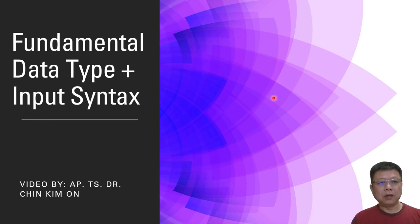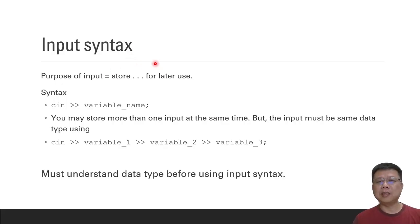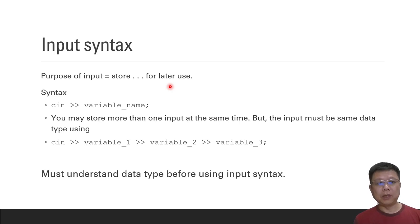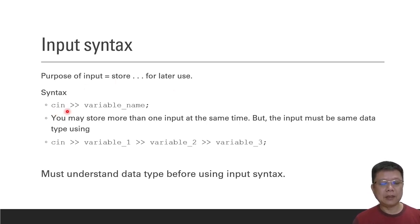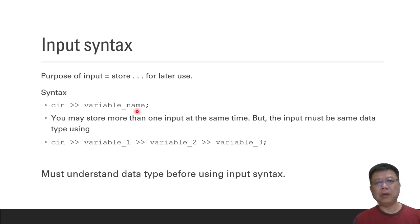In this video we are going to learn about fundamental data types and the input syntax. Input syntax is used when we want to store a variable for later use. We capture inputs from the user, and the syntax is very simple: 'cin' followed by the double greater-than symbol with your variable name. You can give any variable name, and you may store more than one input at the same time.